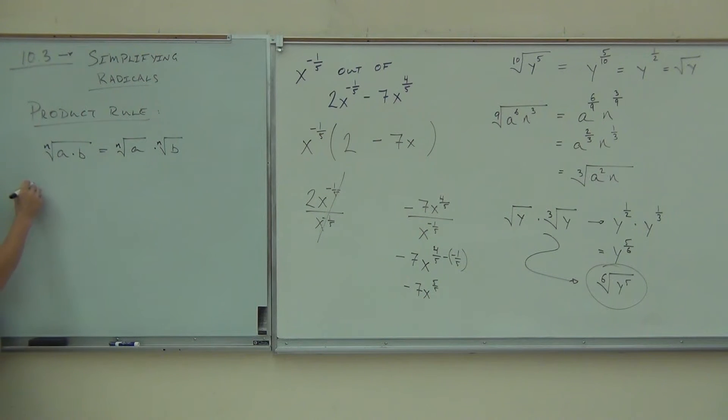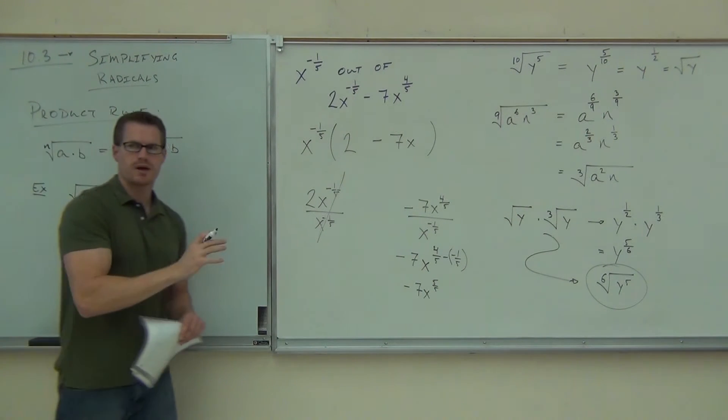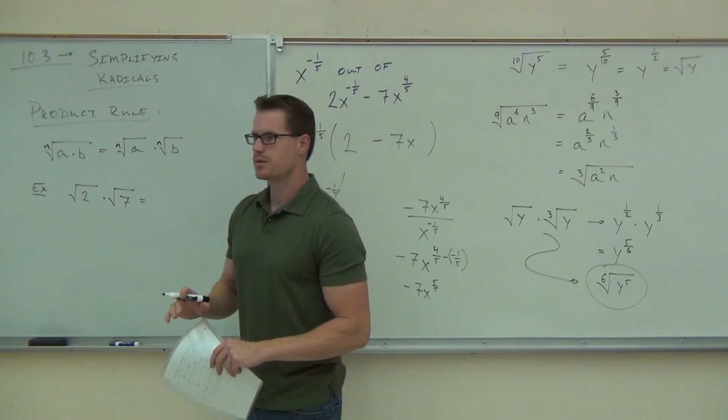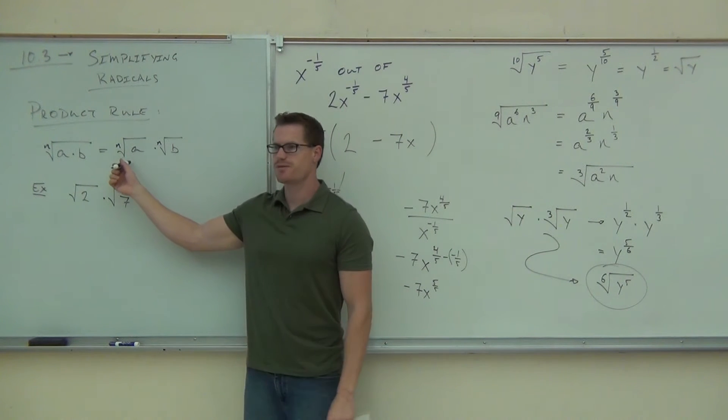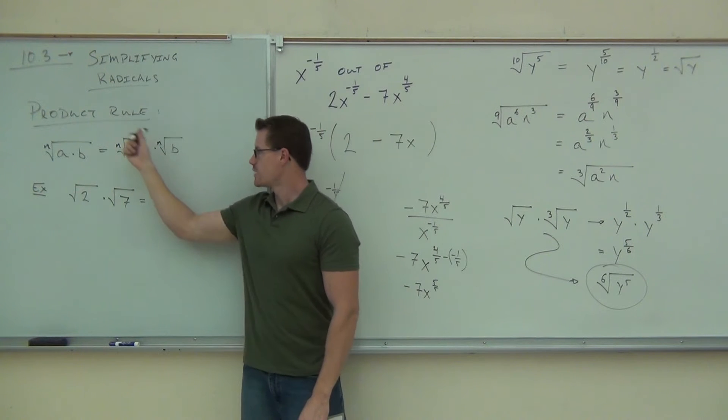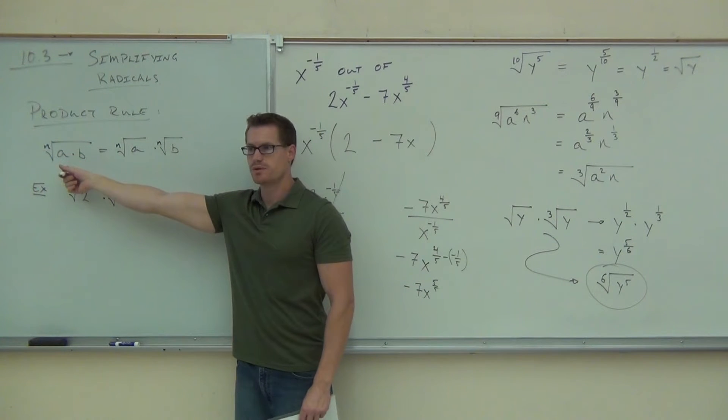Just don't forget the n. A lot of people lose the n. Whatever that power is, or whatever the root is, you've got to keep that root. Also, I need you to know that this works both ways here. If I have the square root of 2 times the square root of 7, can I multiply those roots together?